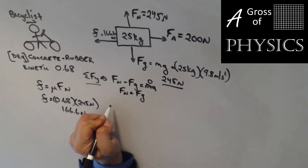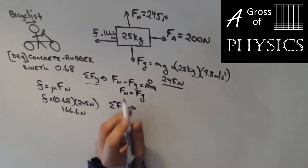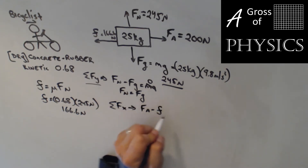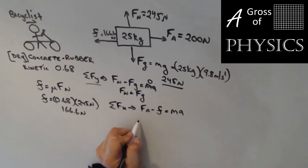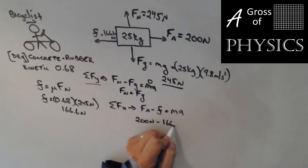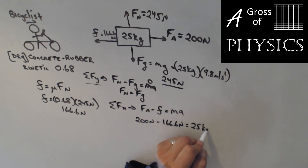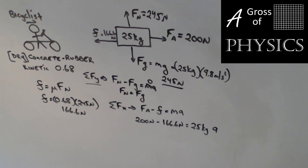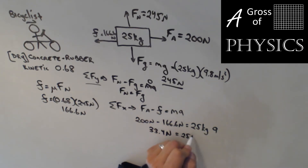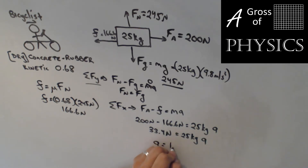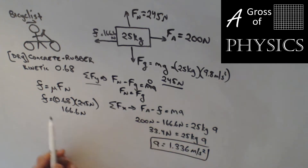We've handled the y direction; now let's look at the x direction. Sum of forces in x: Fa going right (positive) minus friction going left equals ma. So 200 minus 166.6 equals 25 kilograms times a. We have one unknown: 200 minus 166.6 is 33.4 newtons equals 25 times a, giving acceleration a equals 33.4 divided by 25, which is 1.336 meters per second squared.